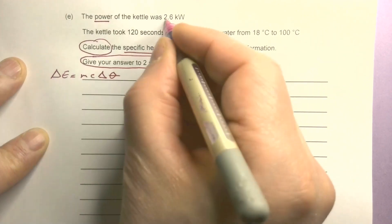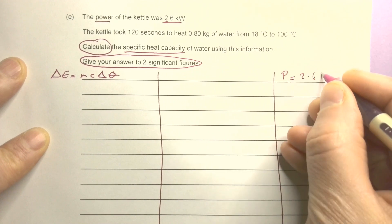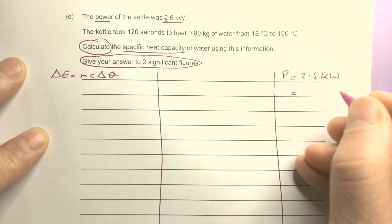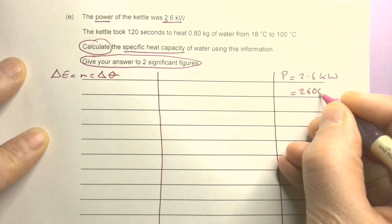I've also got power. So power is 2.6 kilowatts, and as soon as I get these I'm going to convert them because I don't like kilowatts - that's 2600 watts.